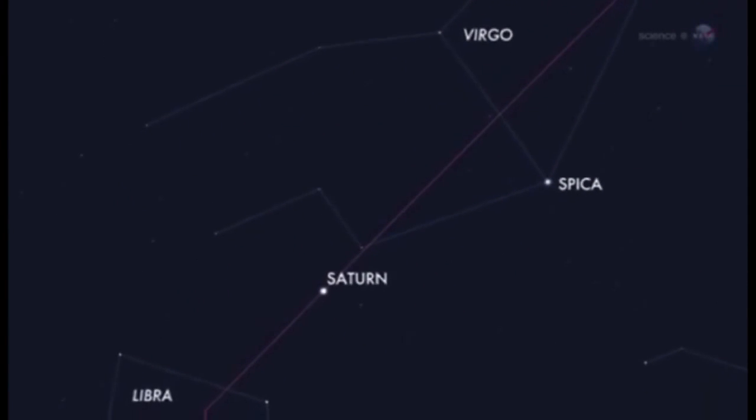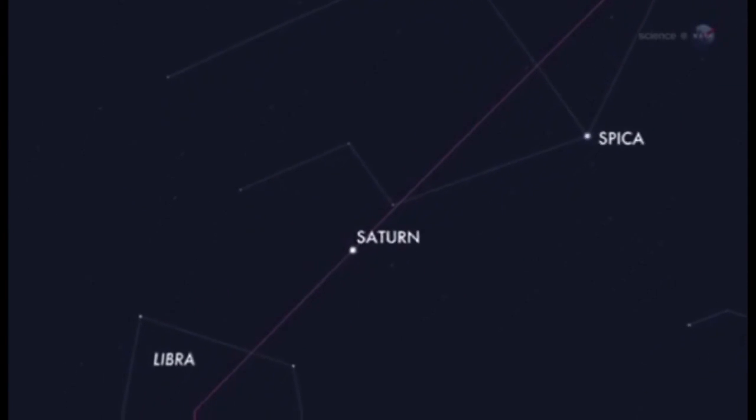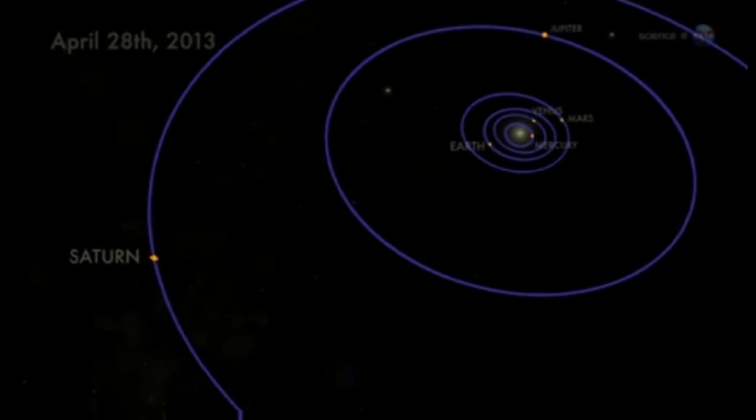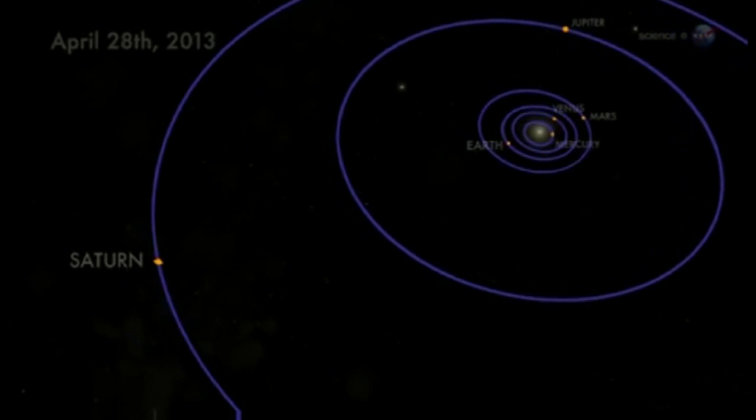Saturn is there, not far from the bright star Spica. On April 28th, Saturn makes its closest approach to Earth, appearing bigger and brighter than at any other time in 2013.